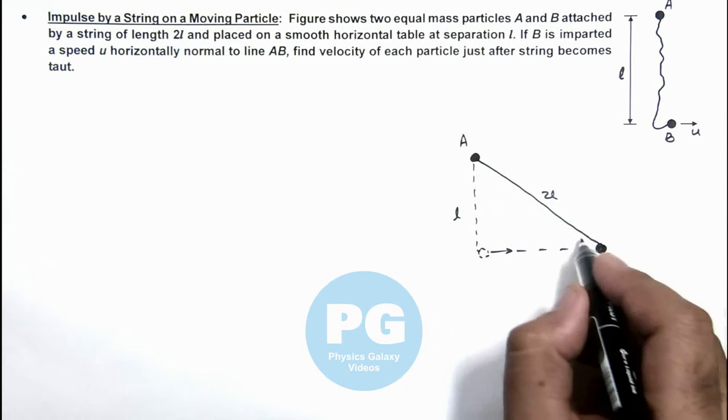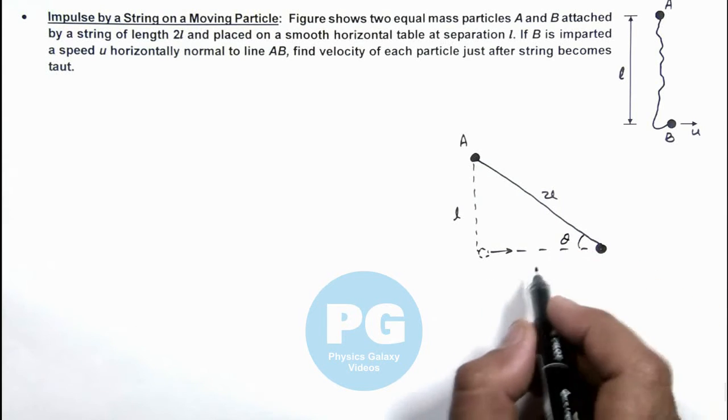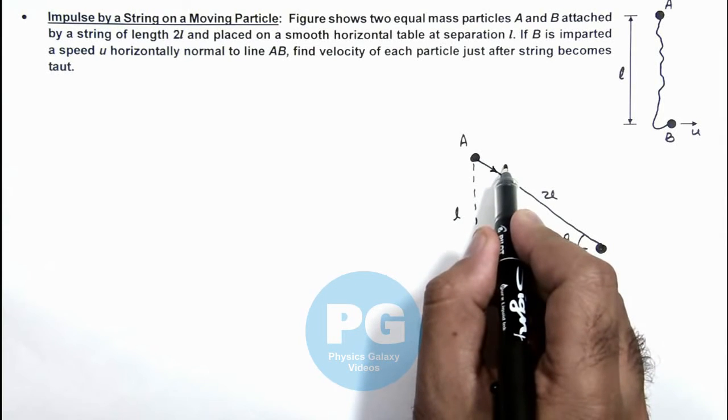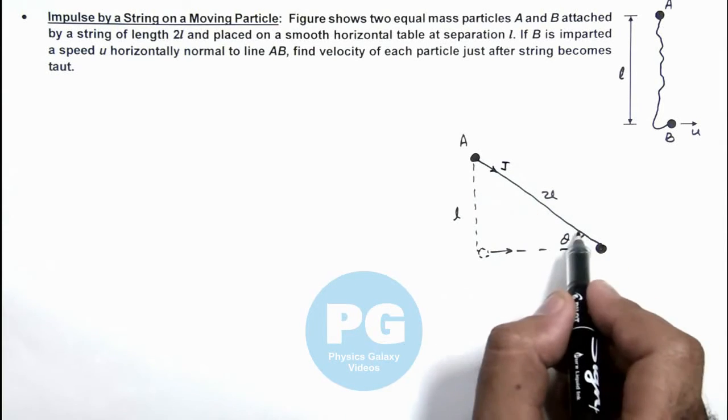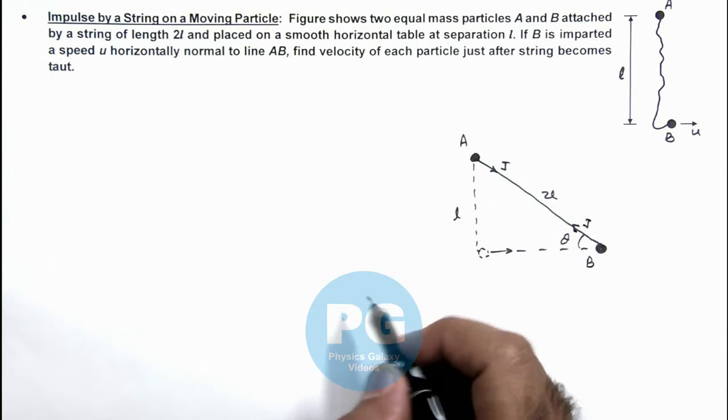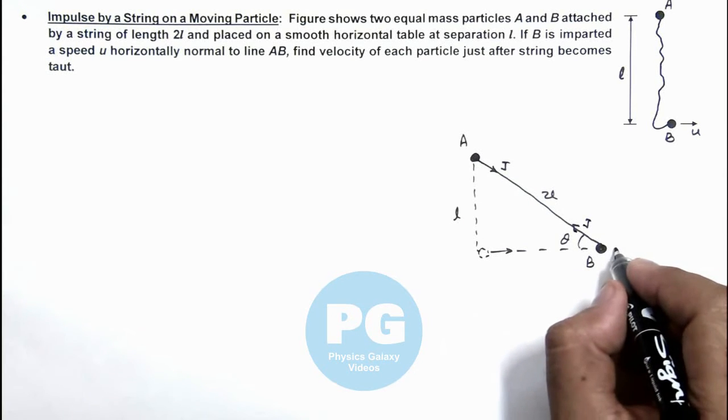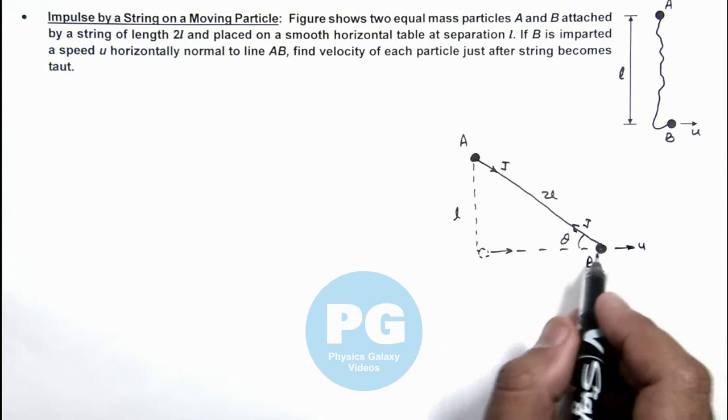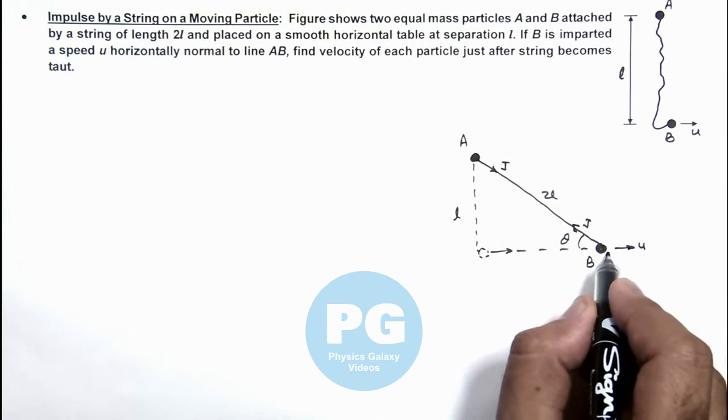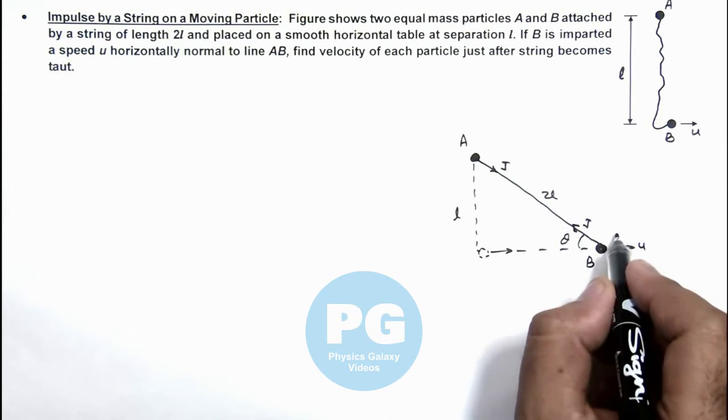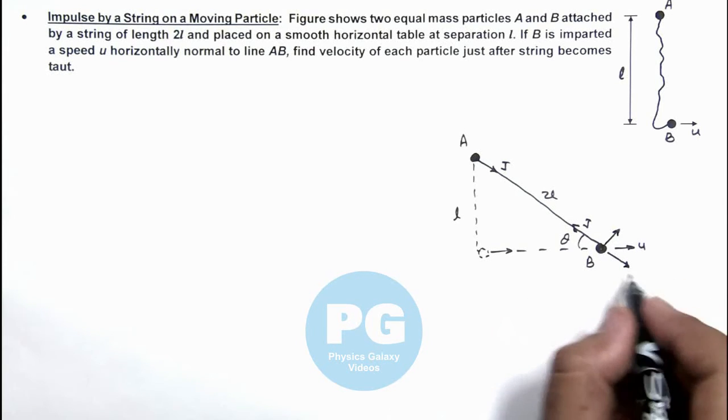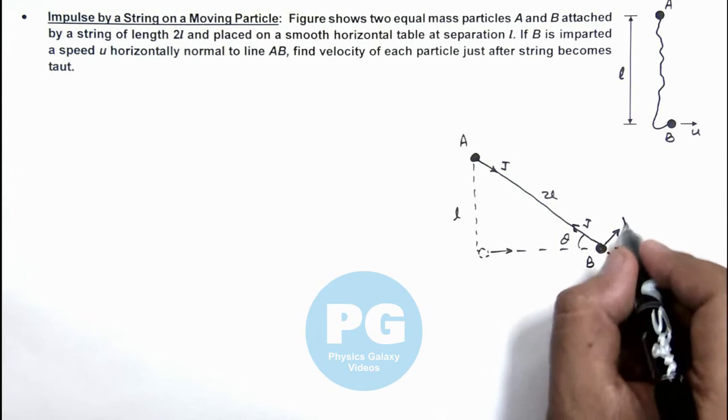So in this situation, if this angle is theta, as soon as string becomes tight, the tension in string imparts an impulse J on the two particles in opposite direction. So as it was moving with a speed u, just after this impulse its velocity along the string and perpendicular to string we can analyze. If these velocities are v1 and v2.